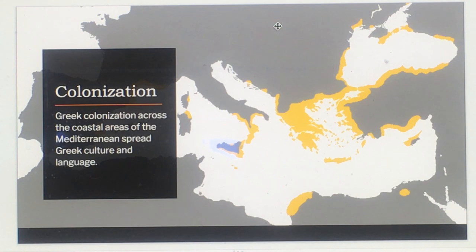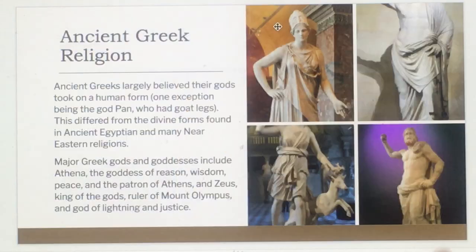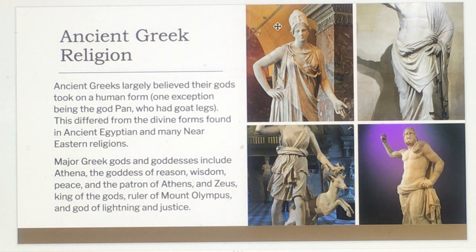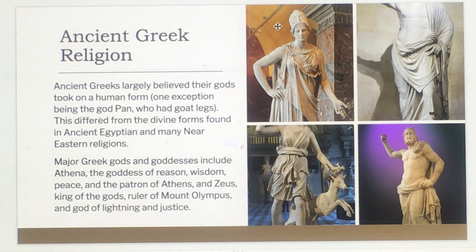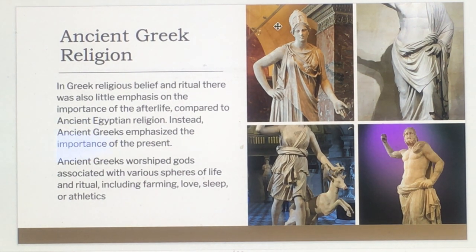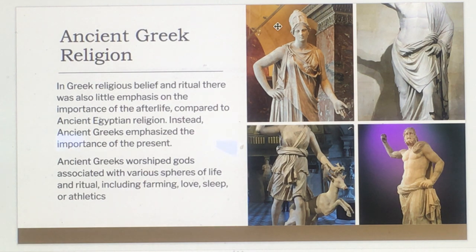Greek colonization across the coastal areas of the Mediterranean spread Greek culture and language. The ancient Greeks largely believed their gods took on human form — one exception being the god Pan, who had goat legs. This differed from divine forms in ancient Egyptian and Near Eastern religions. Major gods included Athena, goddess of reason and wisdom, patron of Athens, and Zeus, king of the gods. Unlike ancient Egyptians, ancient Greeks placed little emphasis on the afterlife and instead emphasized the importance of the present.